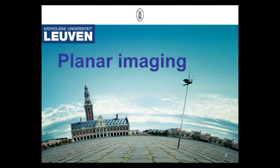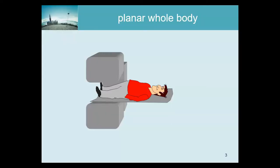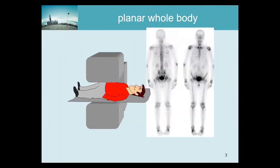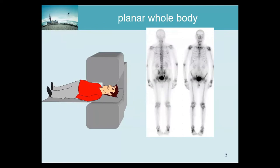So the first and simplest way to make images is to make planar images, which is meaningful with gamma cameras, not with PET cameras because they measure all the lines of response at the same time anyway. But for a gamma camera this matters and it's a very popular investigation, in particular for scanning whole body, for making whole body scans of the bone tracer distribution.